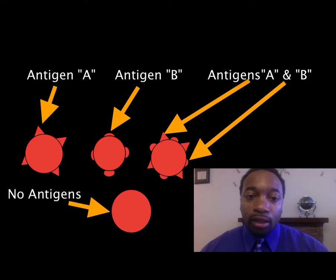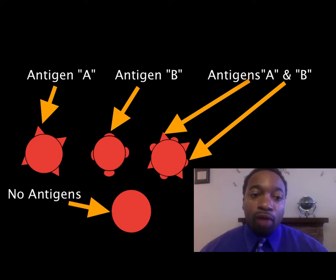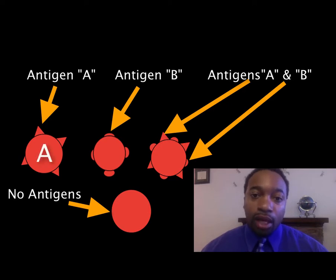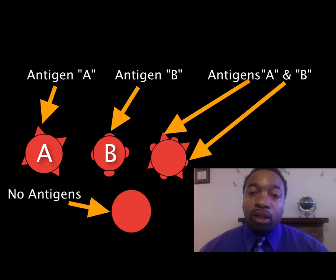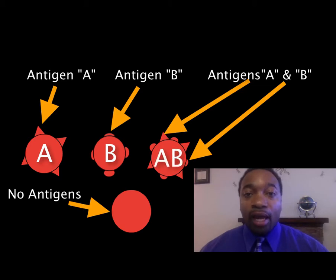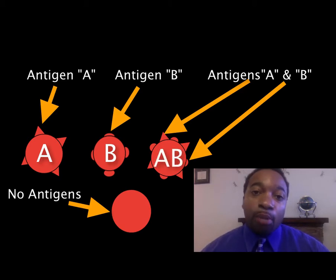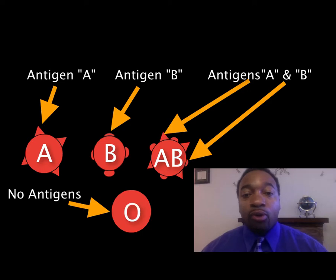And that refers to our blood types. Blood type A — you have the A antigen. Blood type B — you have the B antigen. Blood type AB — you have both A and B antigens. And blood type O — you have neither A nor B antigens.